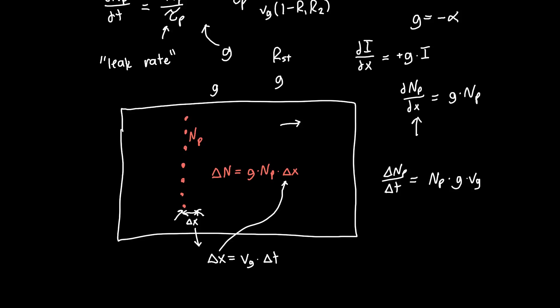And if you take the limit as delta t approaches zero, you get it in terms of the derivative: dNP/dt equals NP times g times vg, because there's no delta t dependence on the right hand side. You could have also got this by just using the chain rule: dNP/dt equals dNP/dx times dx/dt, and this term is just equal to the group velocity.